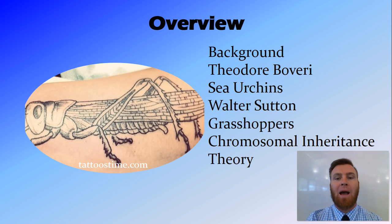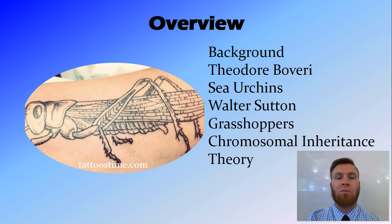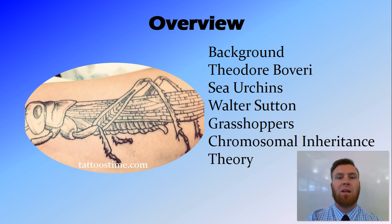In this video we've looked at the background to the Sutton-Boveri chromosomal inheritance theory. In particular, we talked about the developments in microscopes in the late 19th century, Theodore Boveri and his study of sea urchins — which are transparent and undergo synchronous cell division — and Walter Sutton, who continued Boveri's work and showed that chromosomes are actually the units of heredity corresponding to Mendel's factors passed from parent to child. Finally, we covered the chromosomal inheritance theory, which brings both scientists' work together. Thanks for watching.